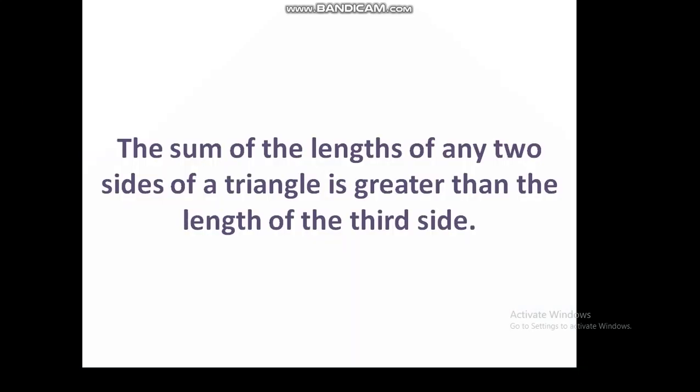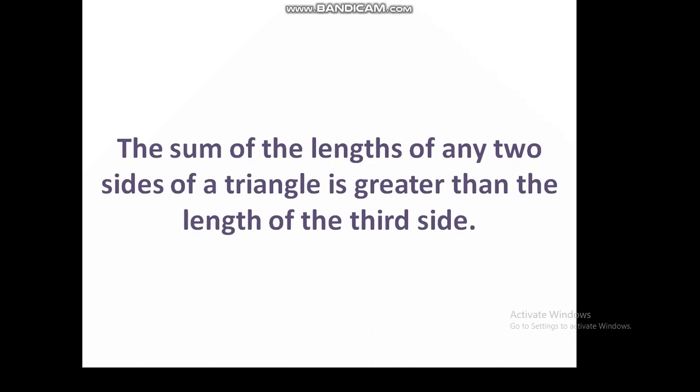So, we can say that construction of a triangle is not possible if the sum of the lengths of any two sides is less than or equal to the third side. Construction of a triangle is possible only if the sum of the lengths of any two sides is greater than the length of the third side. Hope you have enjoyed this property to draw a triangle.